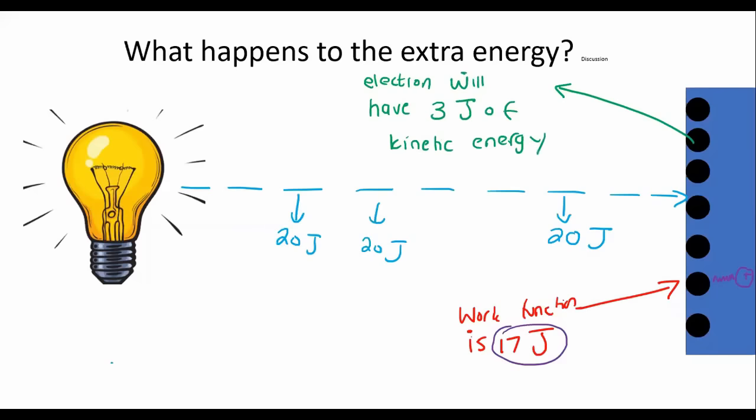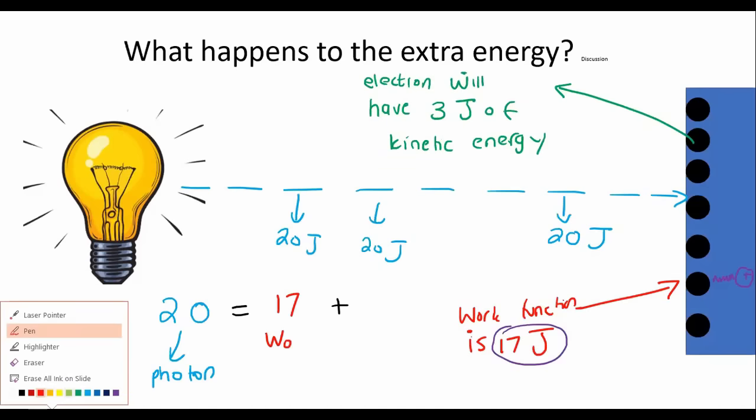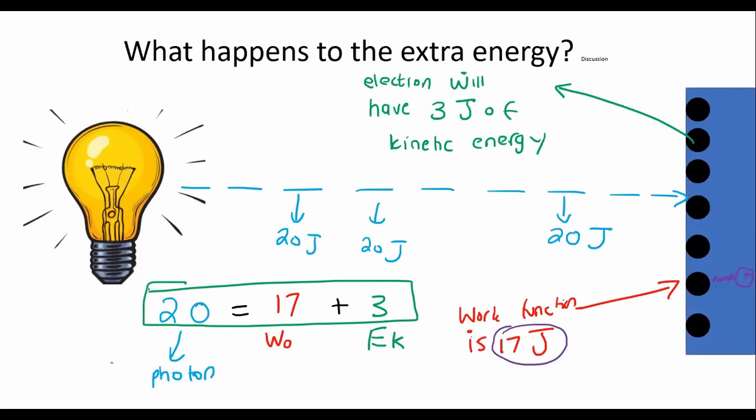So have a look here guys. If we started off with 20 joules that came in from the photon, then where did that go? Well, that went to the work function. And then where did the remaining energy go? Kinetic energy. So we can see that the law of nature is being conserved. 20 joules coming in, 20 joules is being used. That's the law of nature.